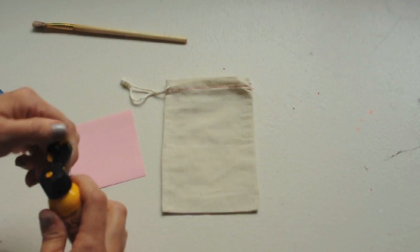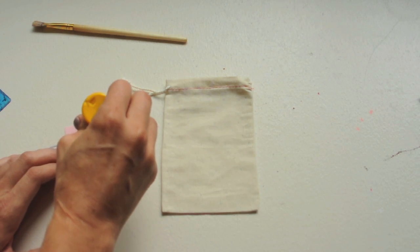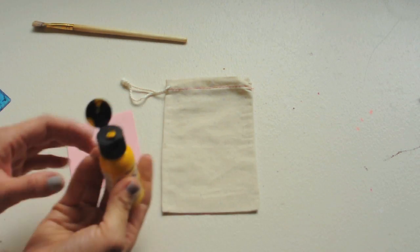Once you've got your dots marked, you'll want to just, using fabric paint, put a little dollop of paint on each dot.